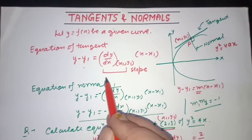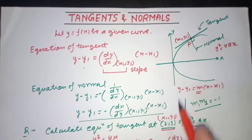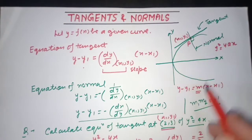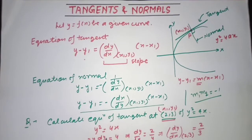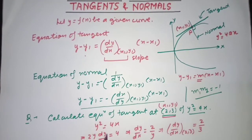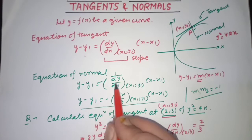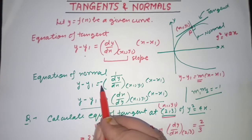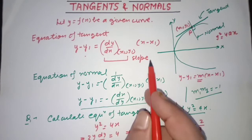Similarly, for the normal, the slope will be the negative reciprocal of the tangent slope. So the equation of normal is: y − y1 = −1/(dy/dx) at (x1, y1) × (x − x1).